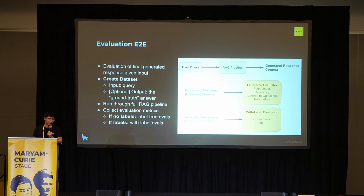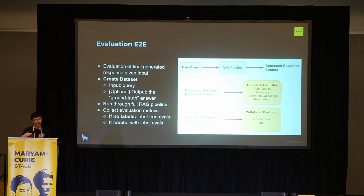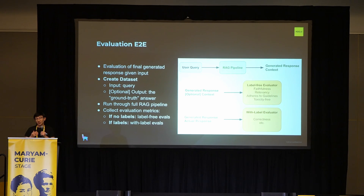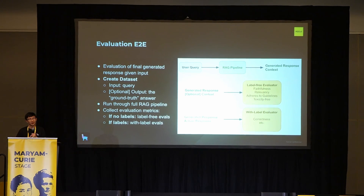There are also end-to-end evals. You can evaluate the final generator response given the input. You can have a query and response dataset — generate this dataset via humans, or you can just manually create it. As a starting point, allocate some time, write out 30 questions and 30 ground truth responses, then run your LLM algorithm over that. You can also synthetically generate it, and we have tools for that. You run your full RAG pipeline over this dataset, collect eval metrics, and measure the quality of the predicted response against the ground truth — checking for hallucination, toxicity, bias. A lot of techniques these days just use an LLM to evaluate other LLM outputs.